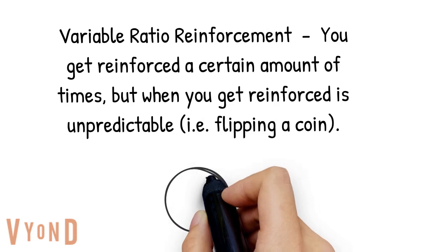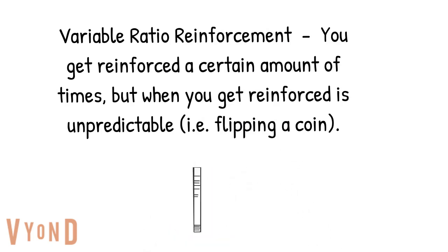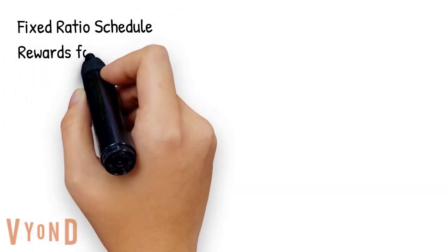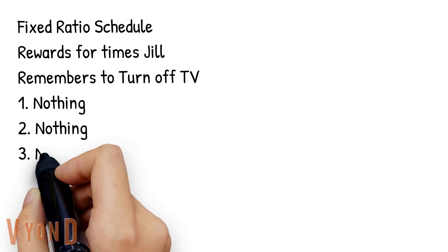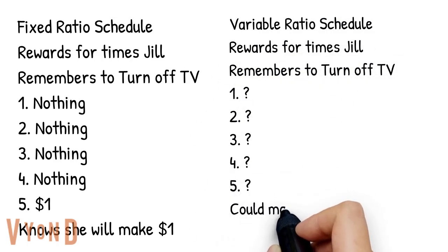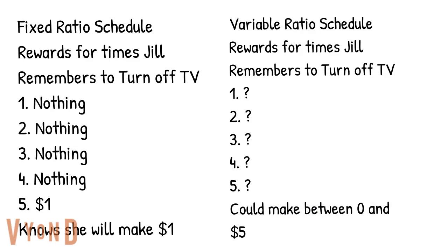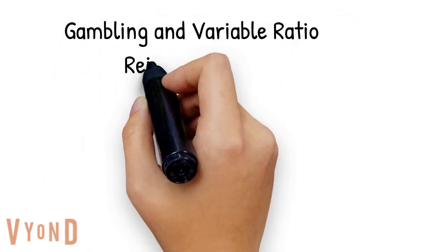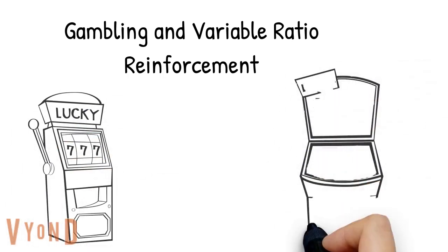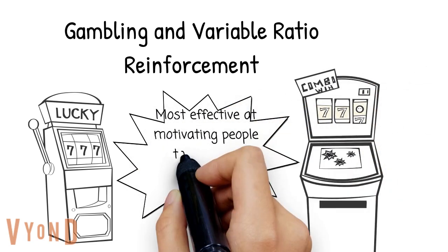Variable ratio reinforcement is getting reinforced after a certain number of times, but when you get reinforced is unpredictable. For example, betting that a flipped coin will land on heads — you know about half the time you'll win and half the time you'll lose, but you don't know exactly when. If Jill were on a variable ratio schedule instead of fixed ratio, she wouldn't know when she'd be reinforced — after five times turning off the TV she could make five dollars or zero dollars. Slot machines are variable ratio reinforcement because people don't know when the jackpot is going to come, so many people continue to lose money because they don't want to miss out on the possibility of a jackpot. Casinos take advantage of this.